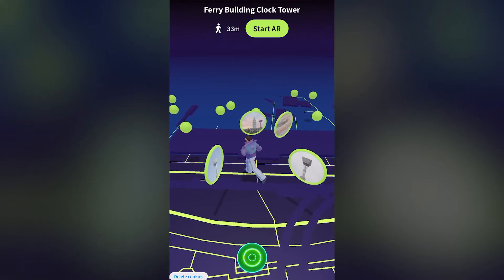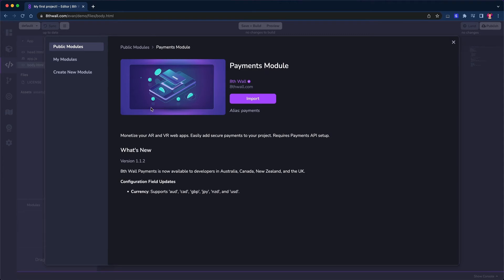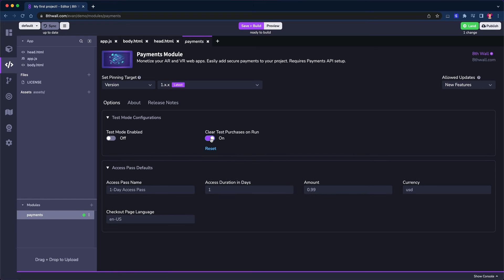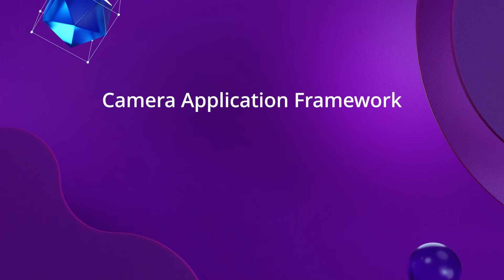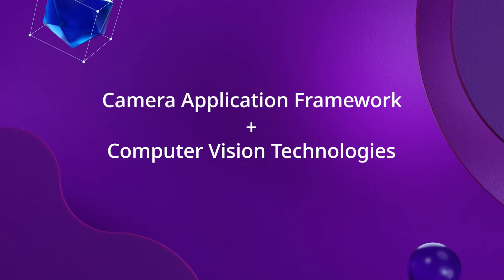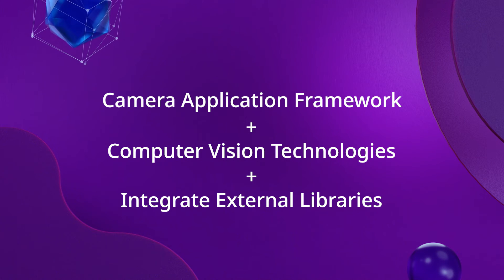The 8thWall platform does not end here. There are more advanced features for you to discover, and we are constantly adding more. Features such as VPS for web or Access Pass payments give you additional layers of customization that can be combined with 8thWall's core features. Additionally, our powerful camera application framework is designed to integrate with computer vision technologies like people occlusion and machine learning models, as well as external libraries like voice recognition, multiplayer, analytics packages, location services, and more.